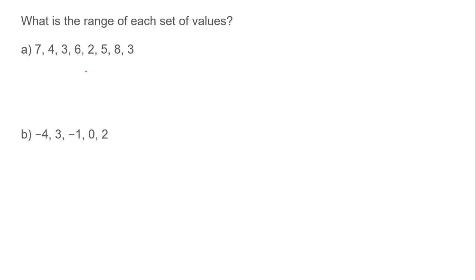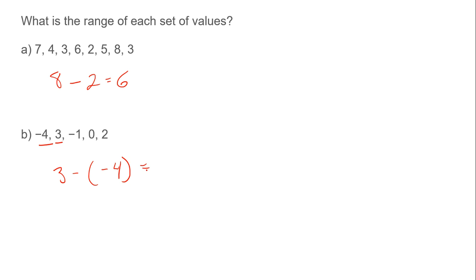So what's the range here? You can pause this and try this on your own. The highest is 8, the lowest is 2, so the range is 6. For the next set: the highest is 3, the lowest is negative 4. So 3 minus negative 4 equals 7 — a negative minus a negative makes a positive. So the range in one set is 7 and in the other is 6.